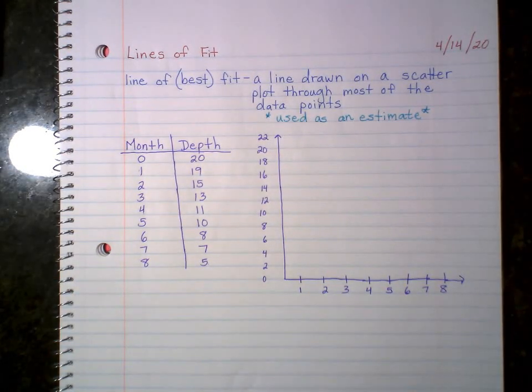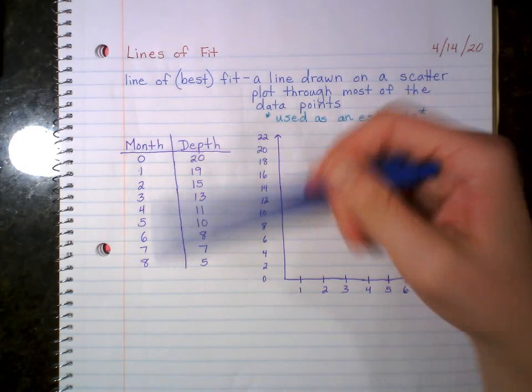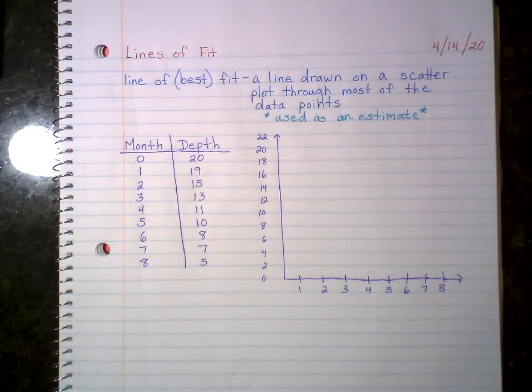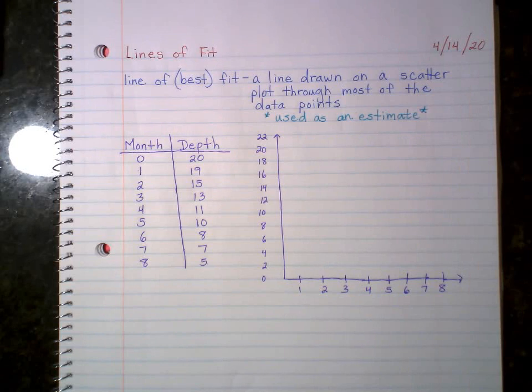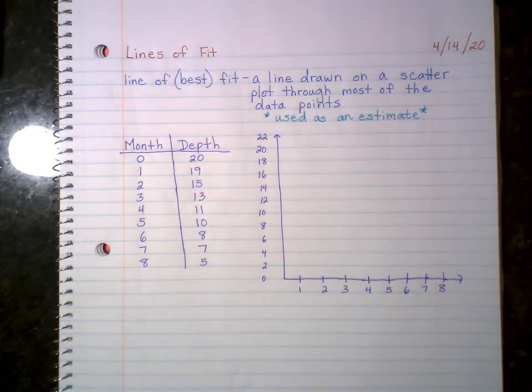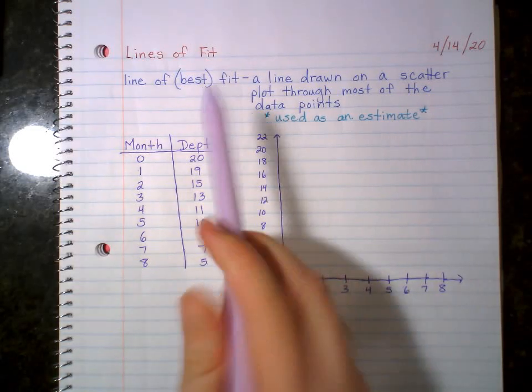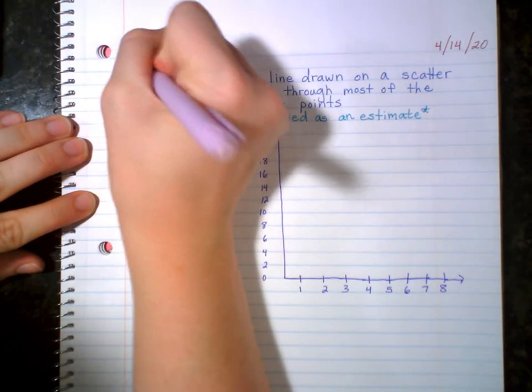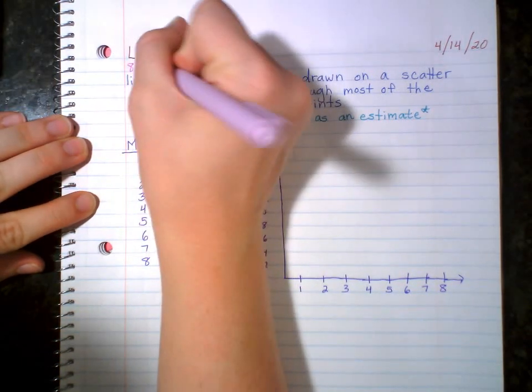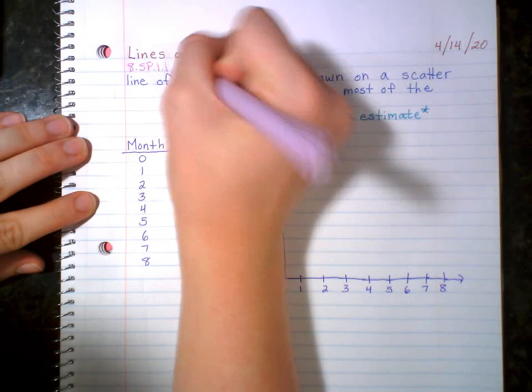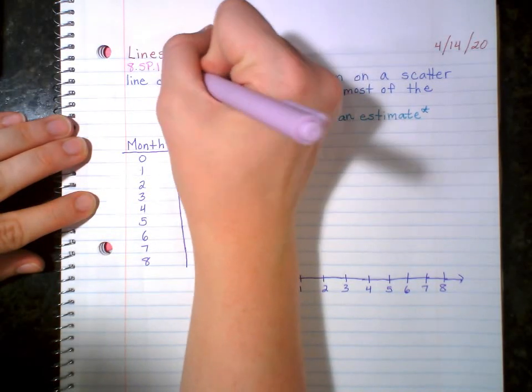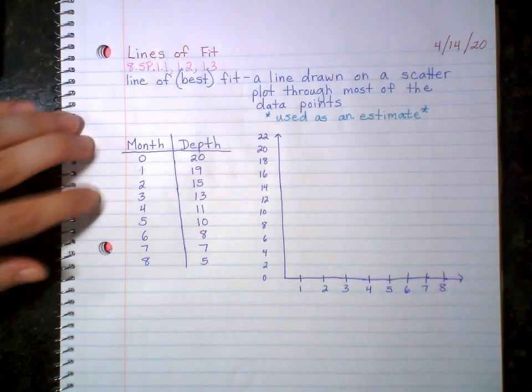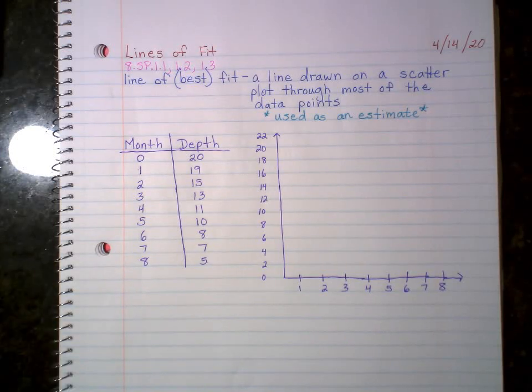All right, if you want to be even more baller, you can actually graph these points. If not, then just resume once we're back. All right, so now if you're watching this, you should have already copied this down. If not, you are not doing as you're told to. Lines of fit. I forgot the standard to write. It is 8 SP, 1.1, 1.2, and 1.3. So we are still doing the same learning goal. We're focusing on it all week.